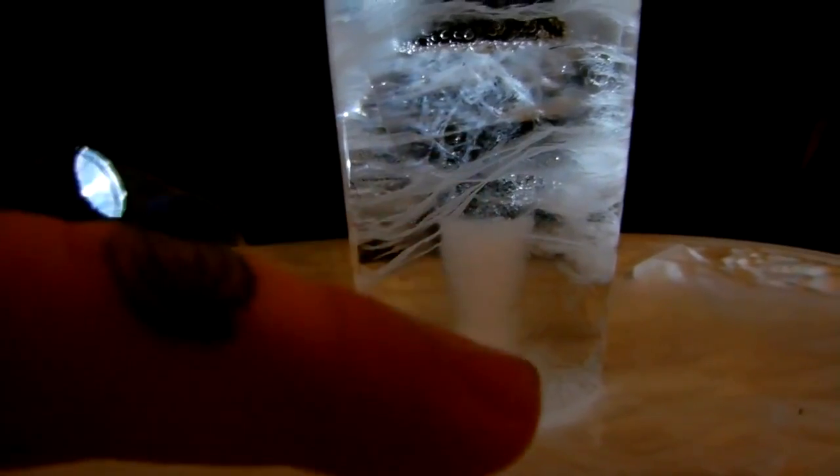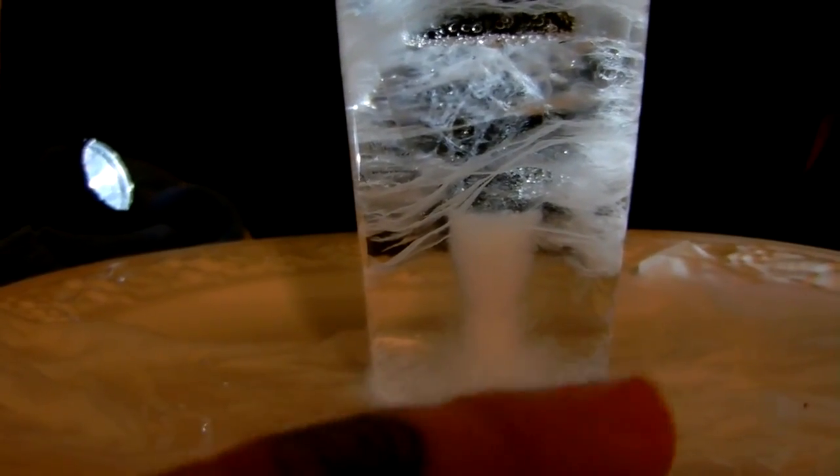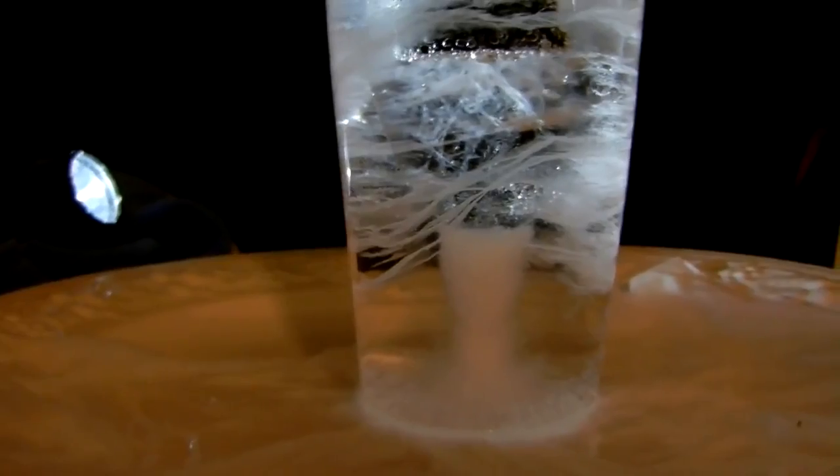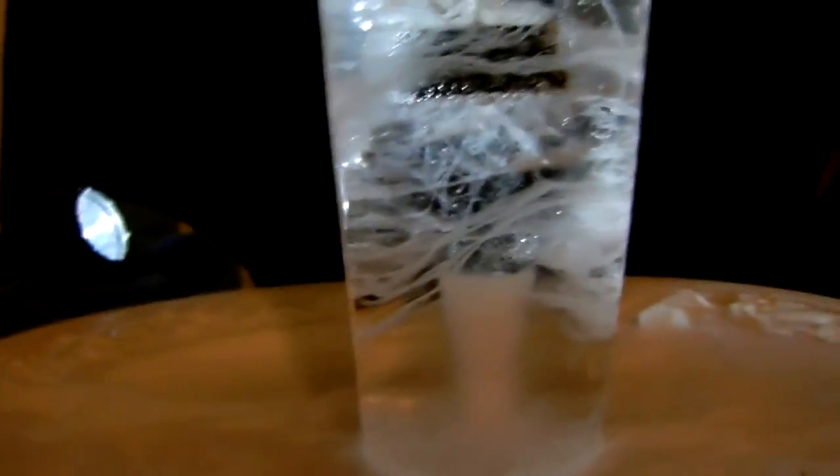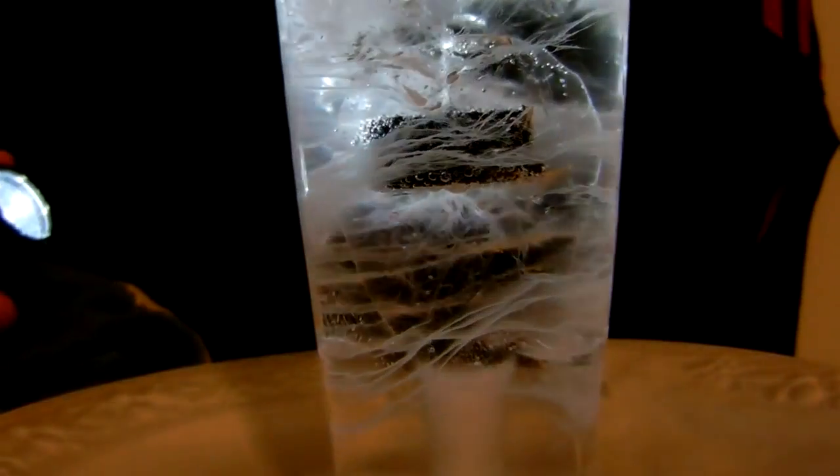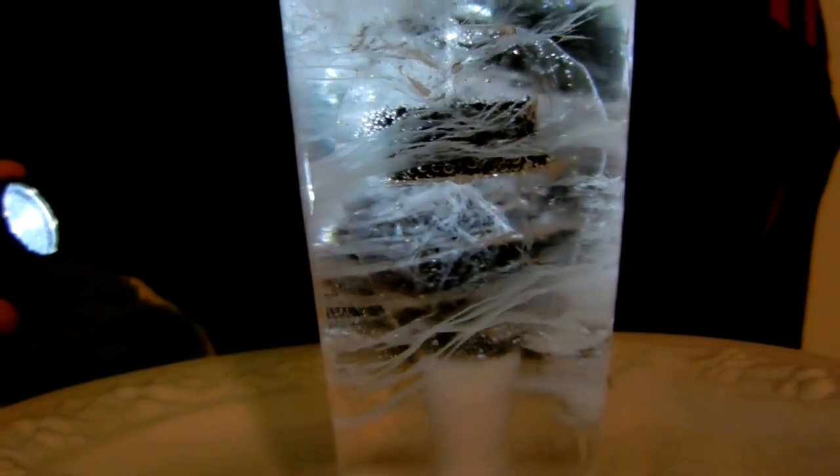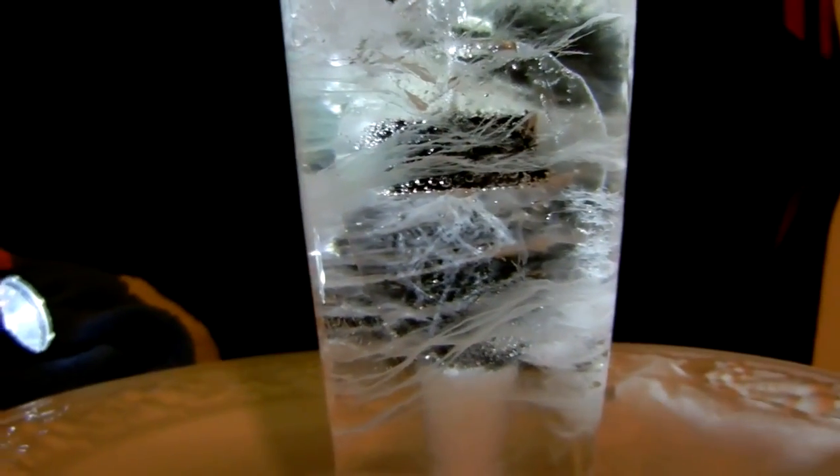At the bottom we have perfect 42.5 degree precessional divergent centrifugal freeze lines, but most importantly, look at the center void here—perfect, not close, not kind of close, absolutely perfect geometric egg-shaped void.